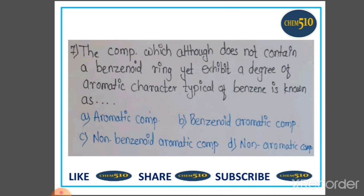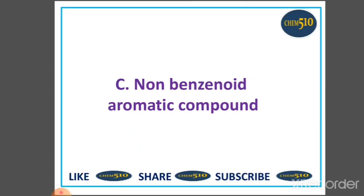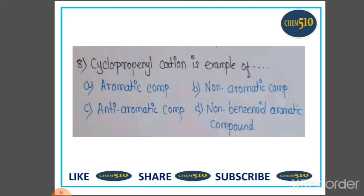Seventh question: The compound which, although does not contain a benzenoid ring, yet exhibits a degree of aromatic character typical of benzene, is known as — Option A: aromatic compound, B: benzenoid aromatic compound, C: non-benzenoid aromatic compound, and D: non-aromatic compound. This is the definition of non-benzenoid aromatic compound, so option C is correct.